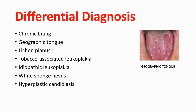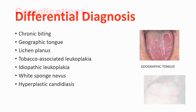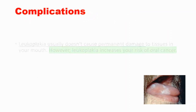In the differential diagnosis, you can think of chronic biting, geographic tongue — which you can see on screen here, and we have a dedicated video about this topic available via the link in the top right corner or down below. You can also consider lichen planus, white sponge nevus, hyperplastic candidiasis, and a number of other diseases and complications.